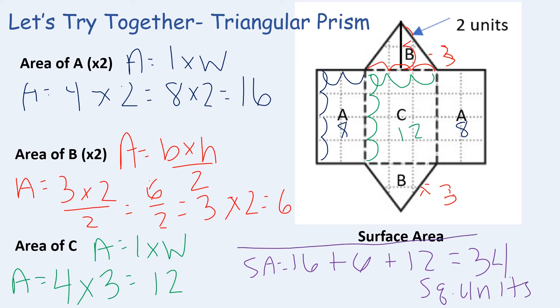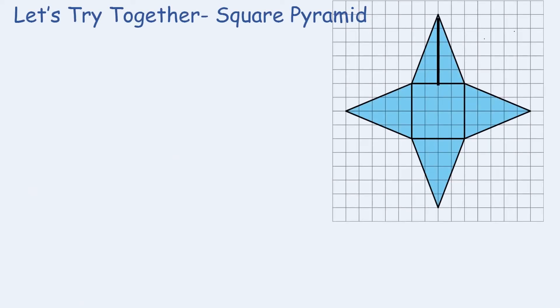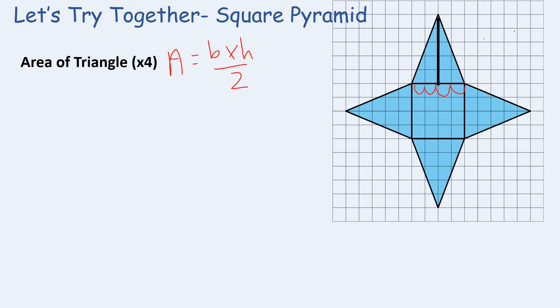That is how we find the surface area of the prism. Now we're going to find the surface area of the net of a square pyramid. If folded up, it creates a pyramid with four triangular sides and one square base. We find the area of each triangle using base times height divided by 2. The base of a triangle is 4 and the height is 5.